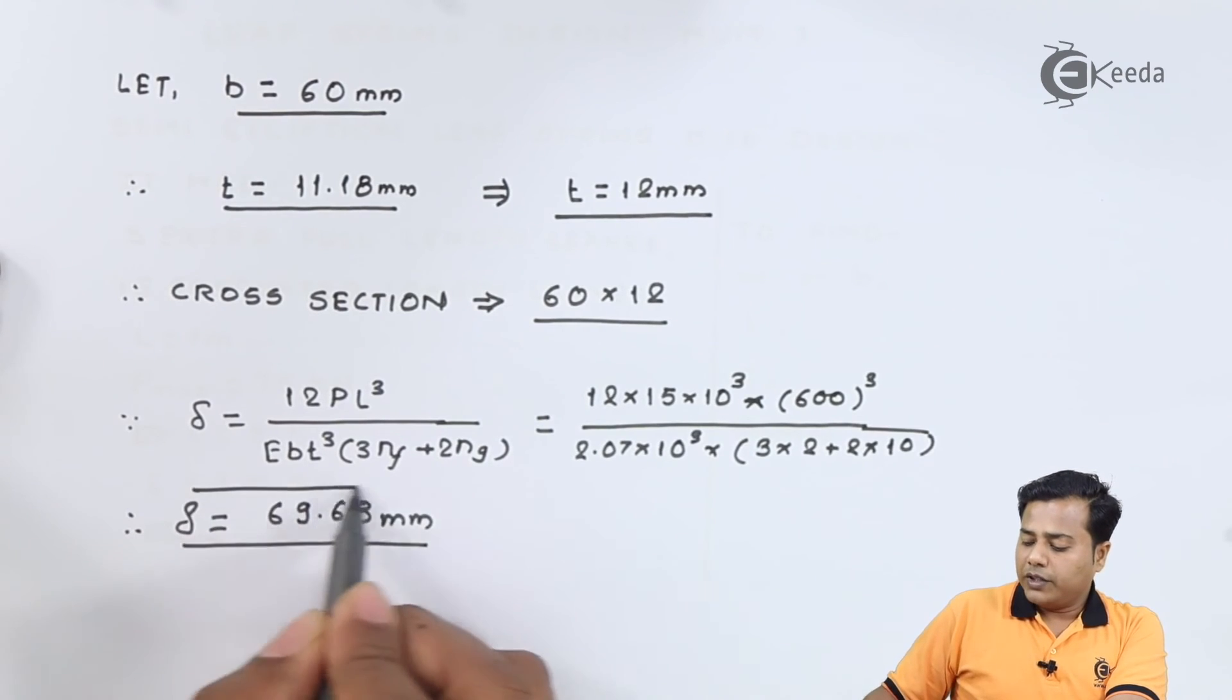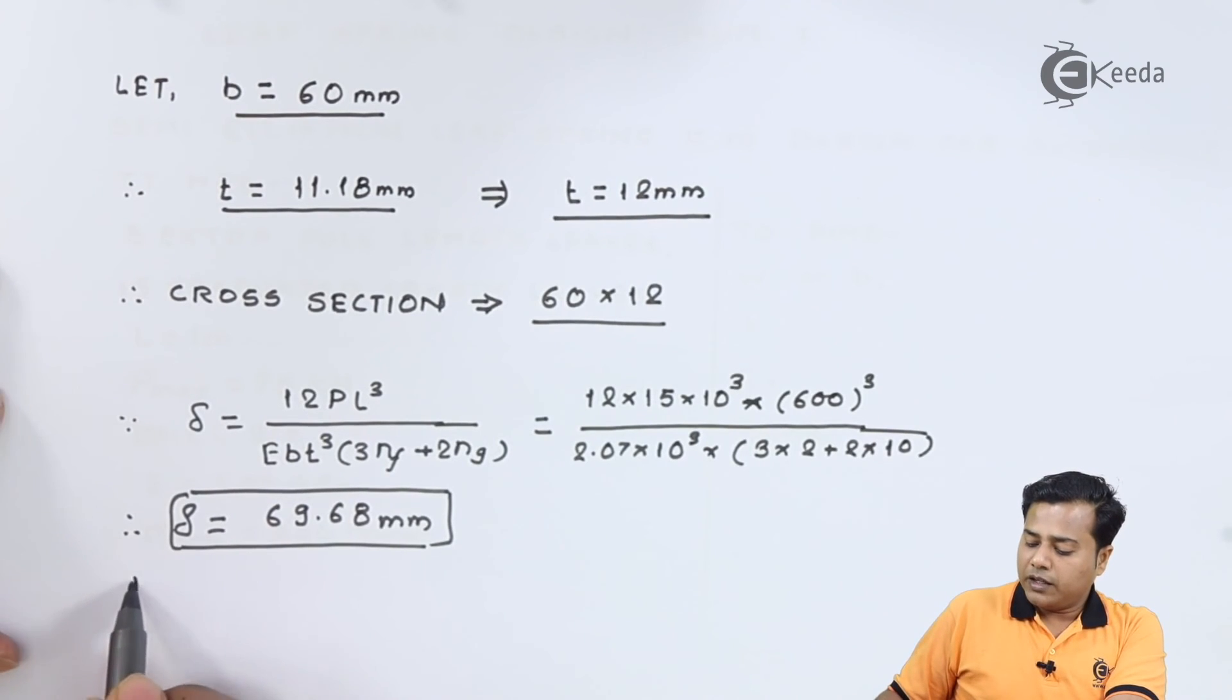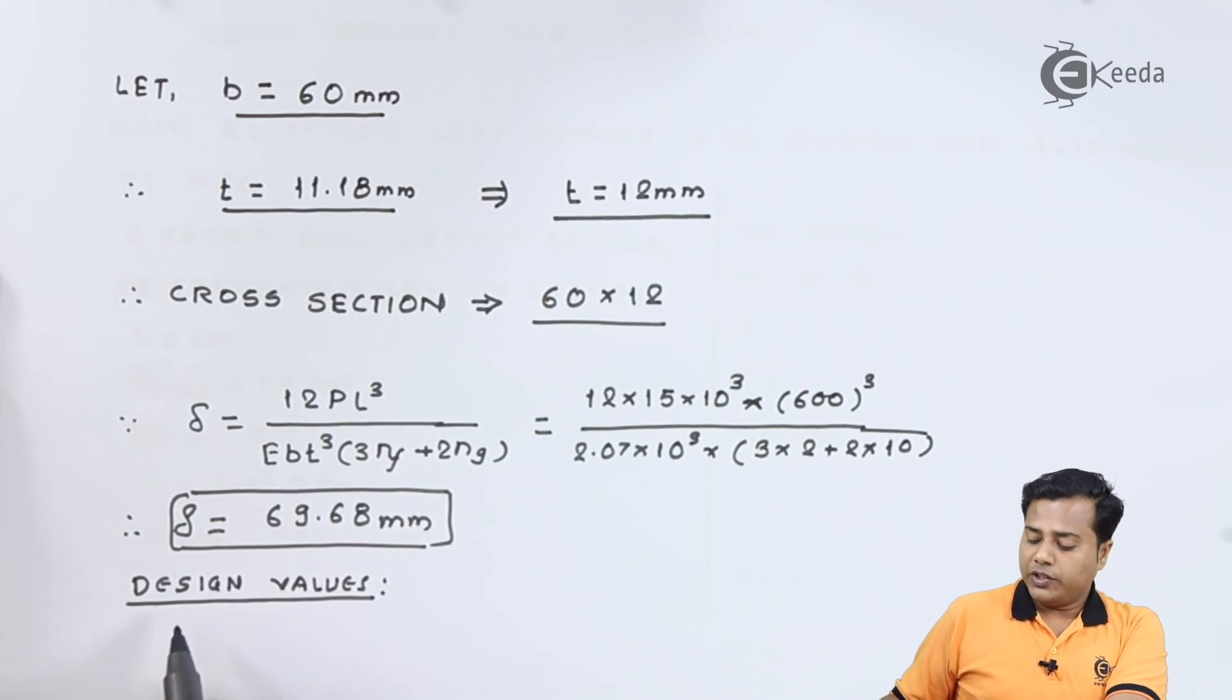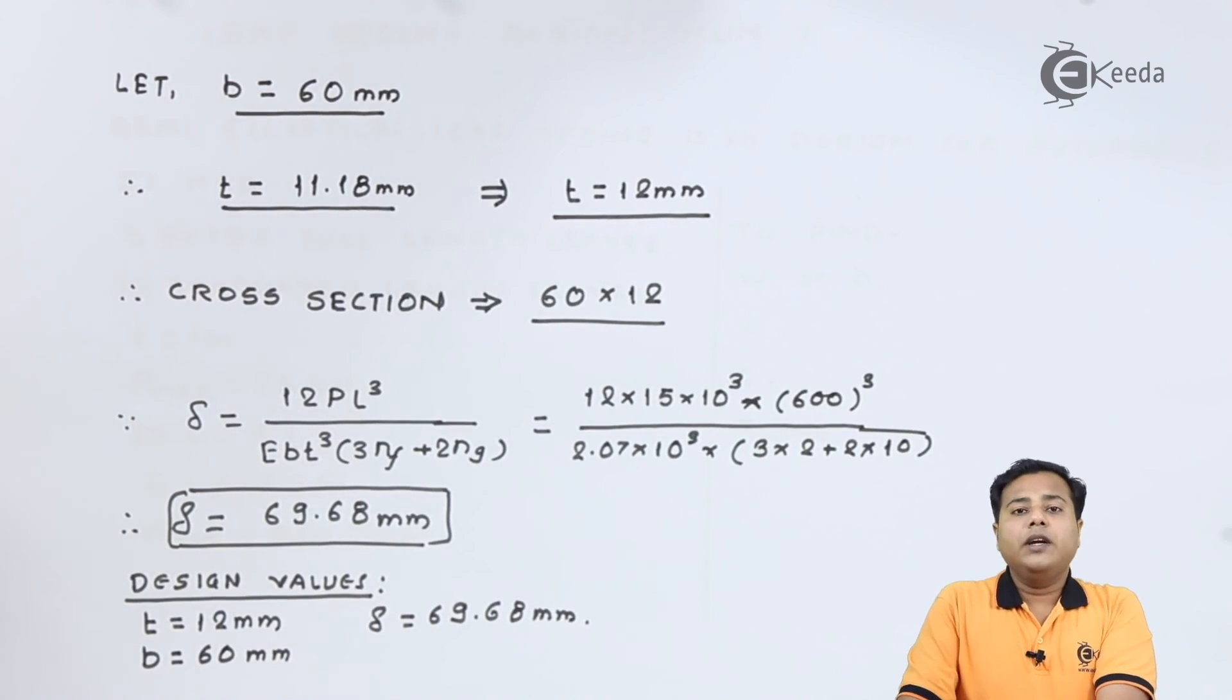There we have concluded with the design of this particular spring. Let me quickly summarize the design values where thickness is 12 millimeter, the width b is 60 millimeter, and the deflection delta is 69.68 millimeter. So there we conclude with the design of the given spring.